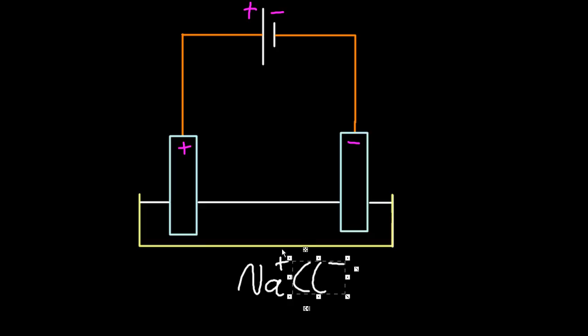Now those two ions, the negative ion goes to the positive electrode, and vice versa.